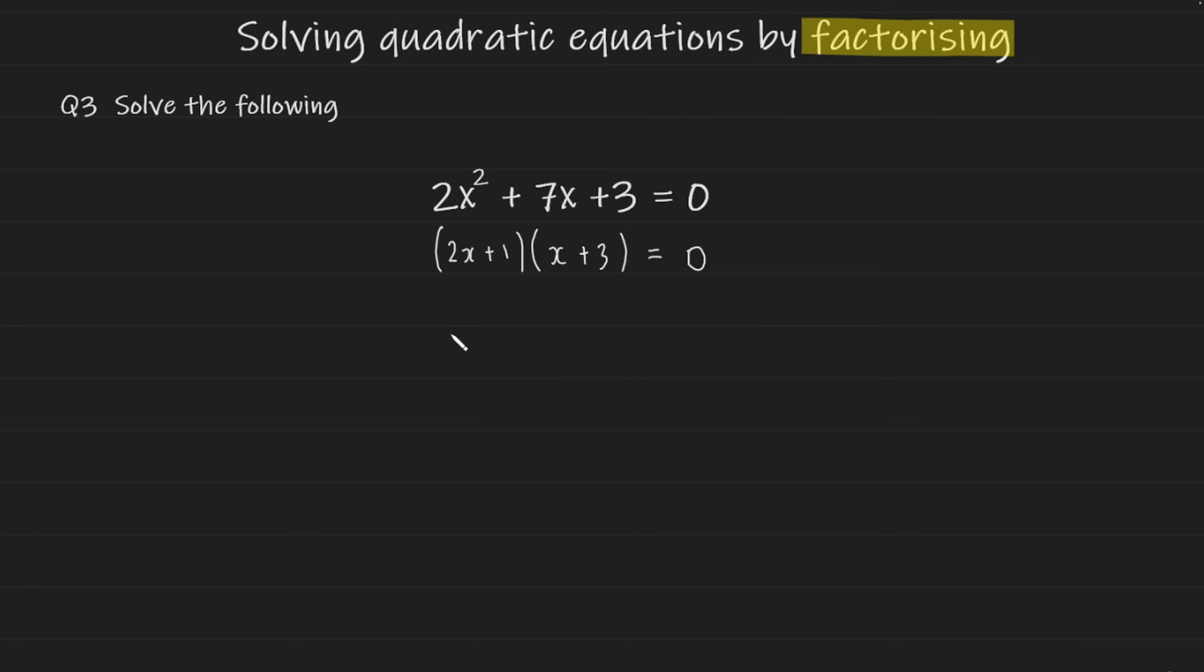Now I take each bracket and equal it to 0. So we're going to have 2x plus 1 is equal to 0 and x plus 3 is equal to 0. Rearranging for x in each equation we'll get the following. So I'm going to apply minus 1 to both sides and this gives us 2x is equal to negative 1.